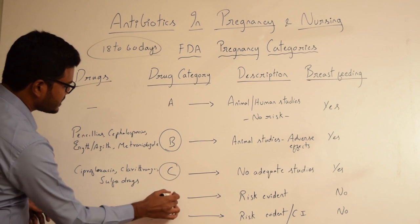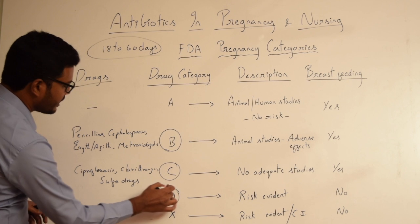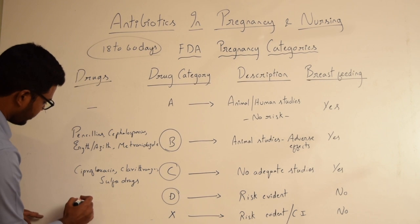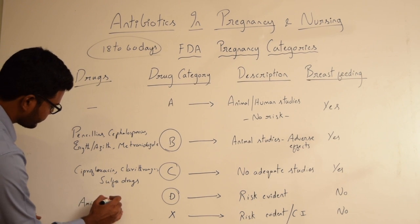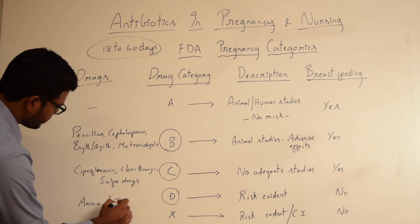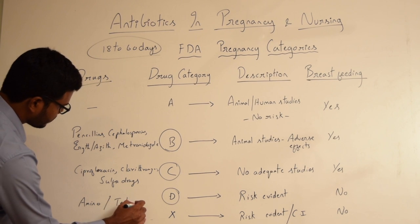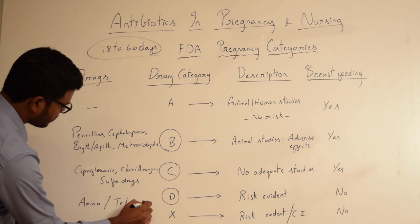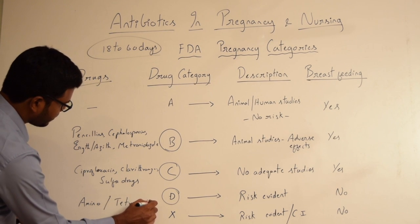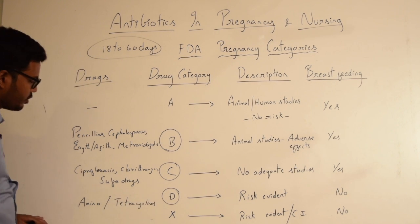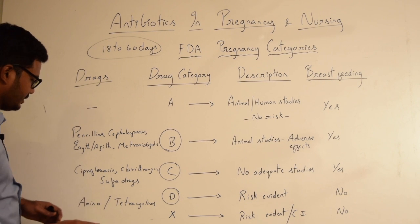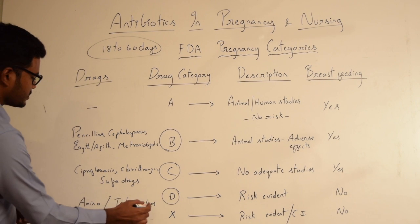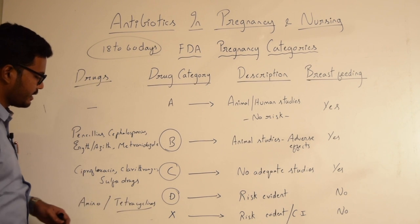Drugs falling under category D are aminoglycosides and tetracyclines. Aminoglycosides include neomycin, kanamycin, gentamycin, and others, along with the various tetracycline-group drugs.